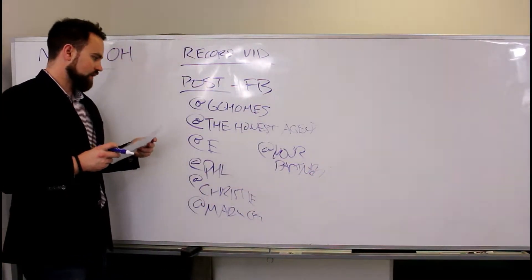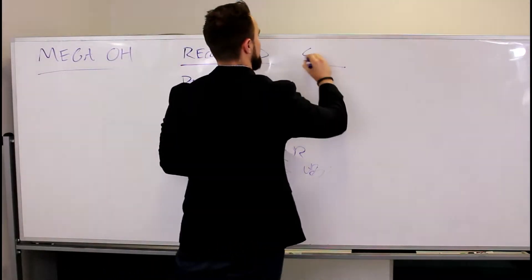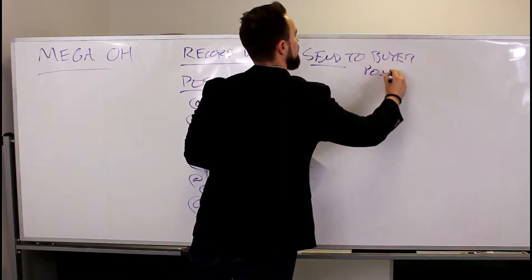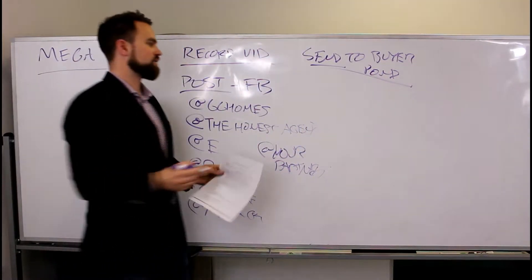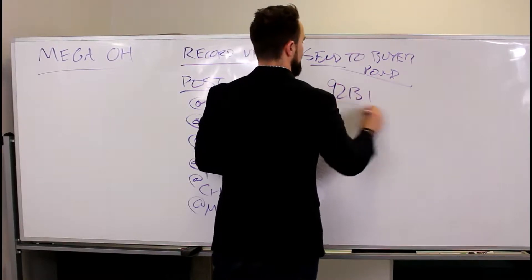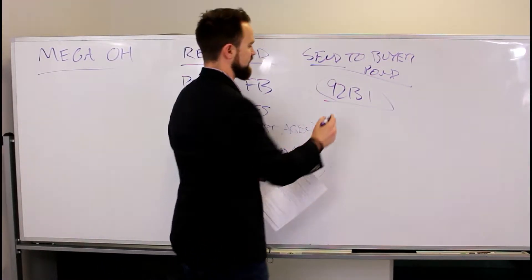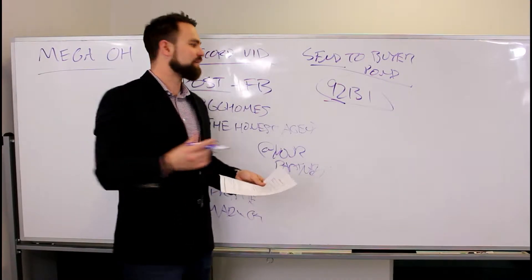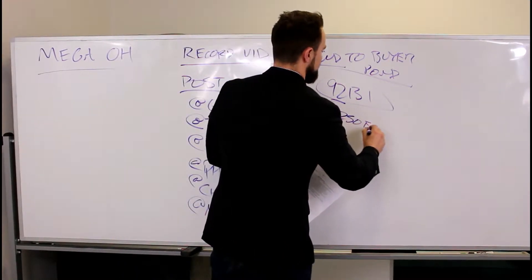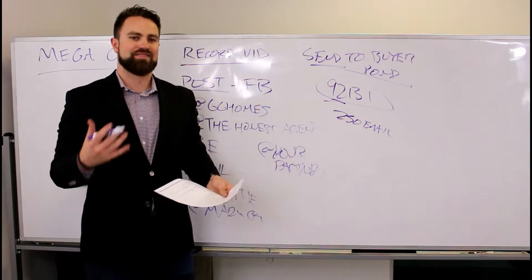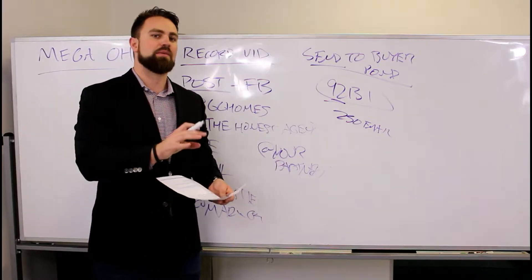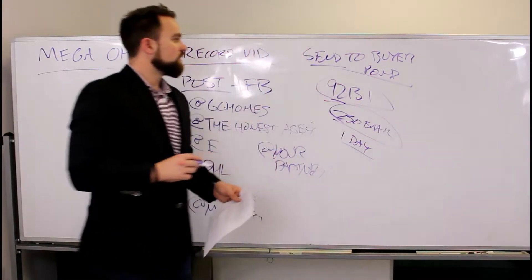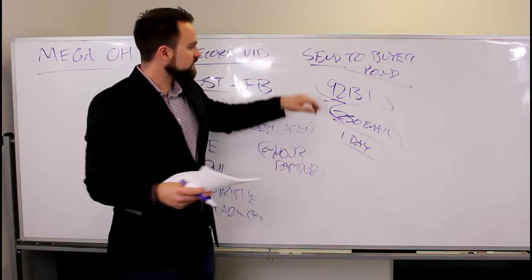Next, send the video to the buyer pond. Let's say you're doing a property in zip code 92131 — you're going to filter the buyer pond using tags for buyers looking in 92131 and send it to that zip code. Here's the rule of thumb: only send about 250 email video messages per day. If you go over 250 using a Google account, it'll get flagged and you might end up in everyone's spam inbox. Stay under 250 contacts in a single day — that's really important. Go to the pond in Follow Up Boss, tag 92131, and send upwards of 250 of this BombBomb video.